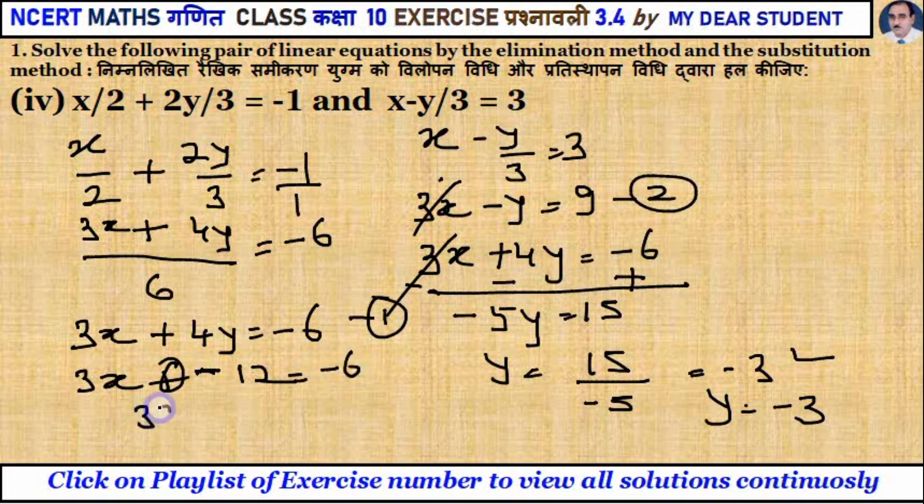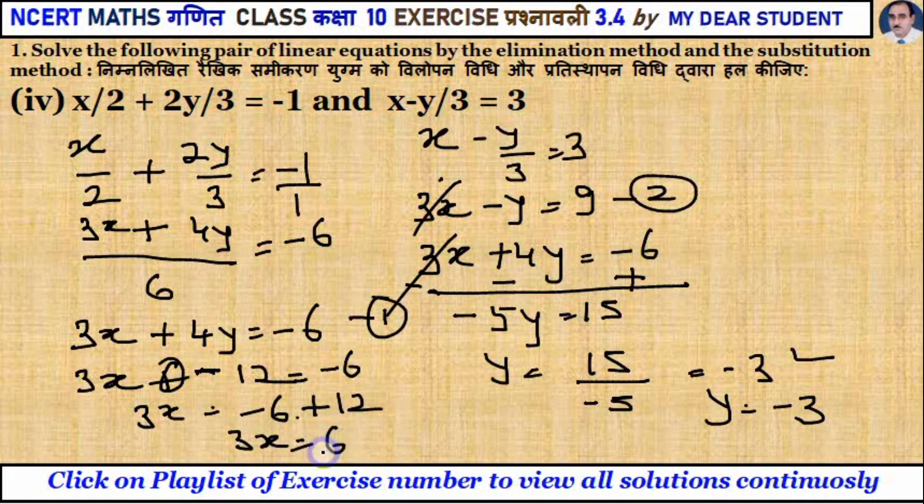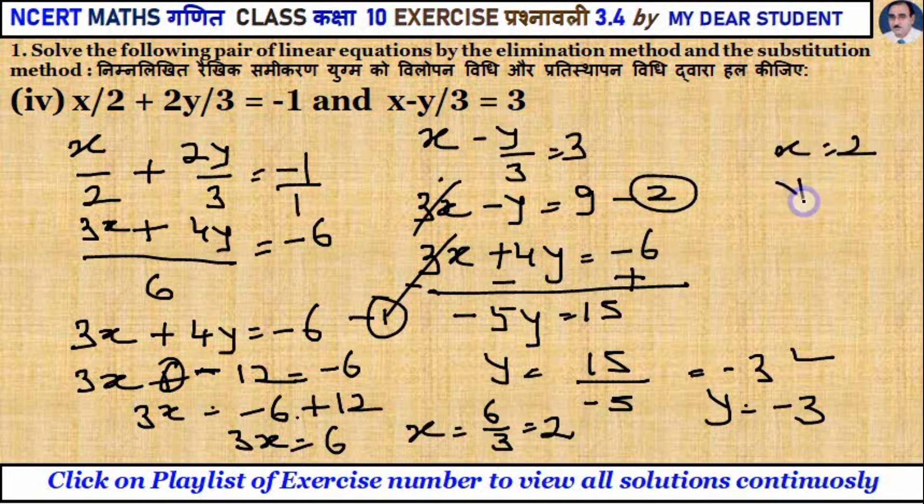So minus 6 plus 12. Then 3x equal to minus 6 plus 12. 3x equals 6. Then x equals 2. So x equals 2 and y equals minus 3.